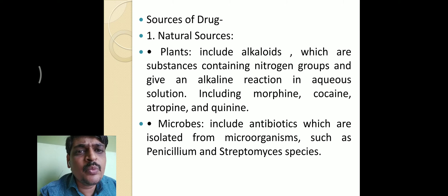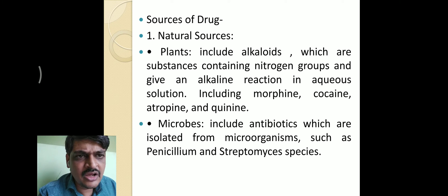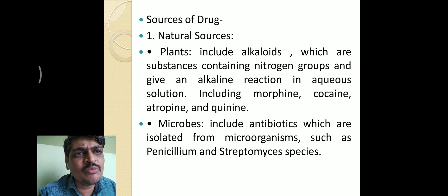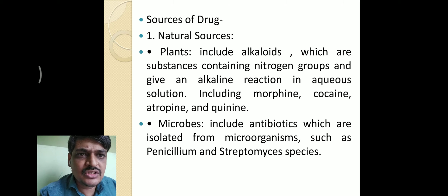Plant sources, also called vegetable sources, include alkaloids. Alkaloids are nitrogenous organic compounds or alkali substances that show physiological actions when administered into the body. Examples include morphine, cocaine, atropine, and quinine — various alkaloids obtained from plant sources.